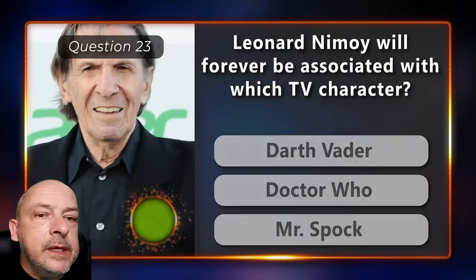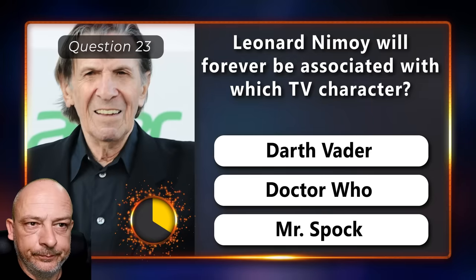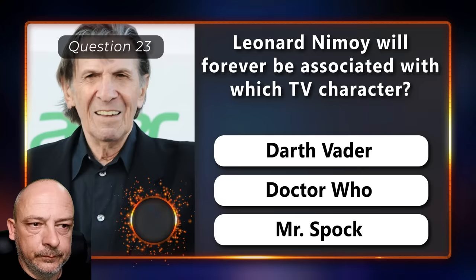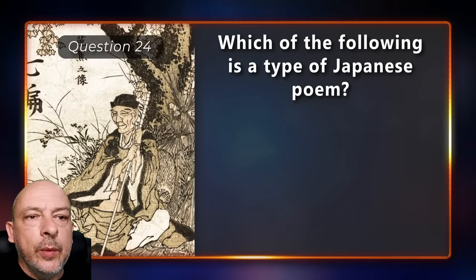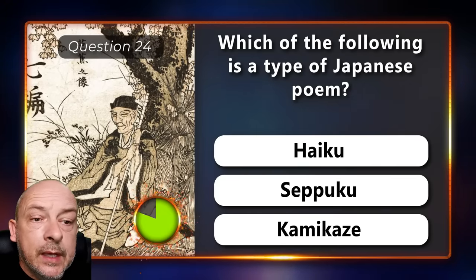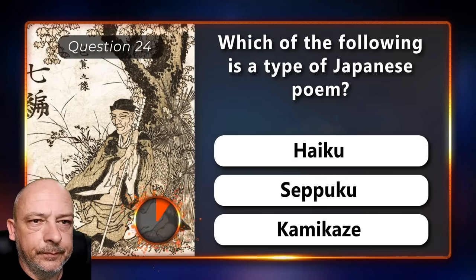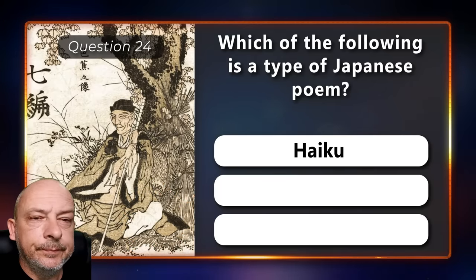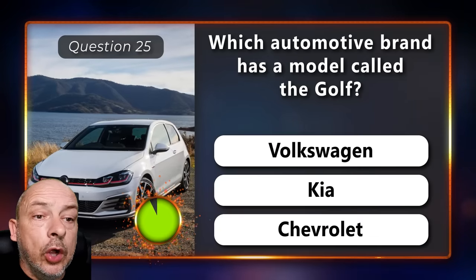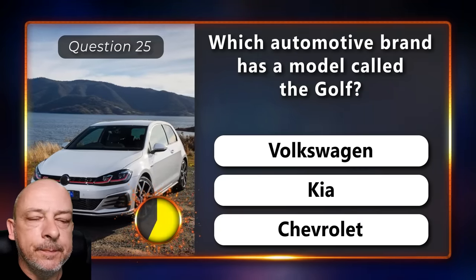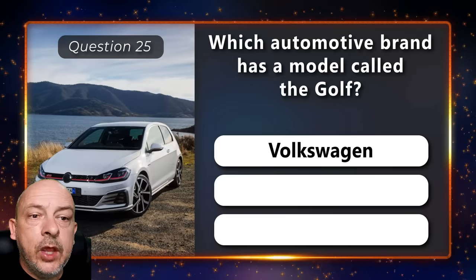Leonard Nimoy will forever be associated with which TV character — Darth Vader, Doctor Who, or Mr. Spock? The correct answer is Mr. Spock. Which of the following is a type of Japanese poem — a haiku, seppuku, or kamikaze? A haiku. Which automotive brand has a model called the Golf — Volkswagen, Kia, or Chevrolet? The answer is Volkswagen.